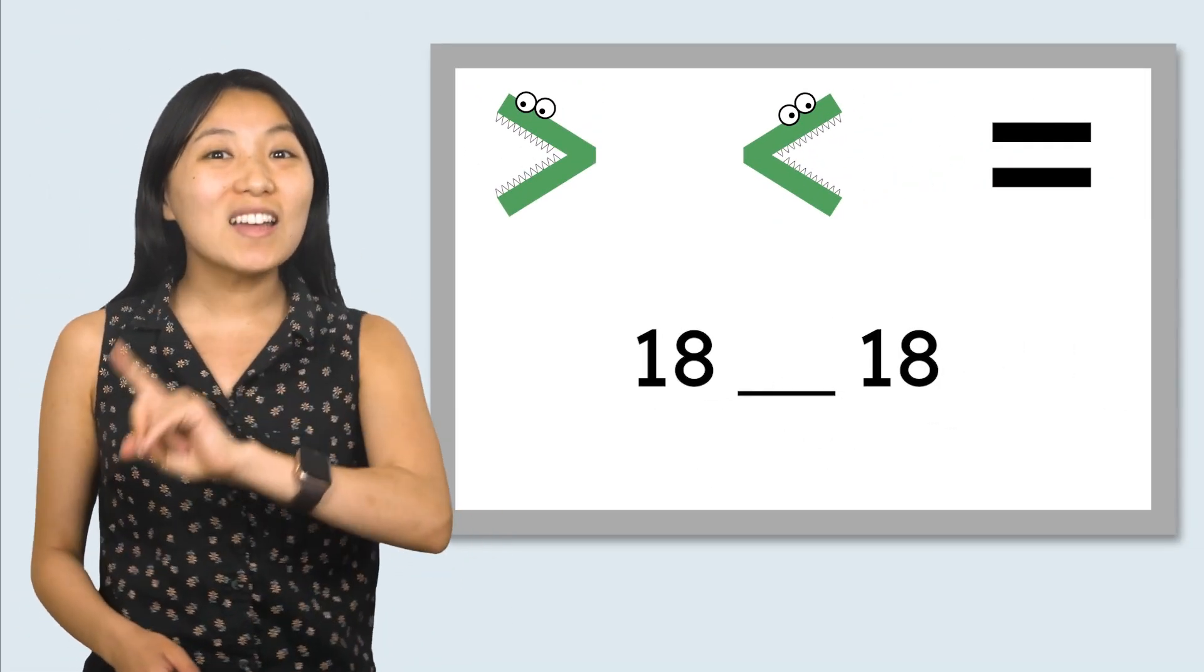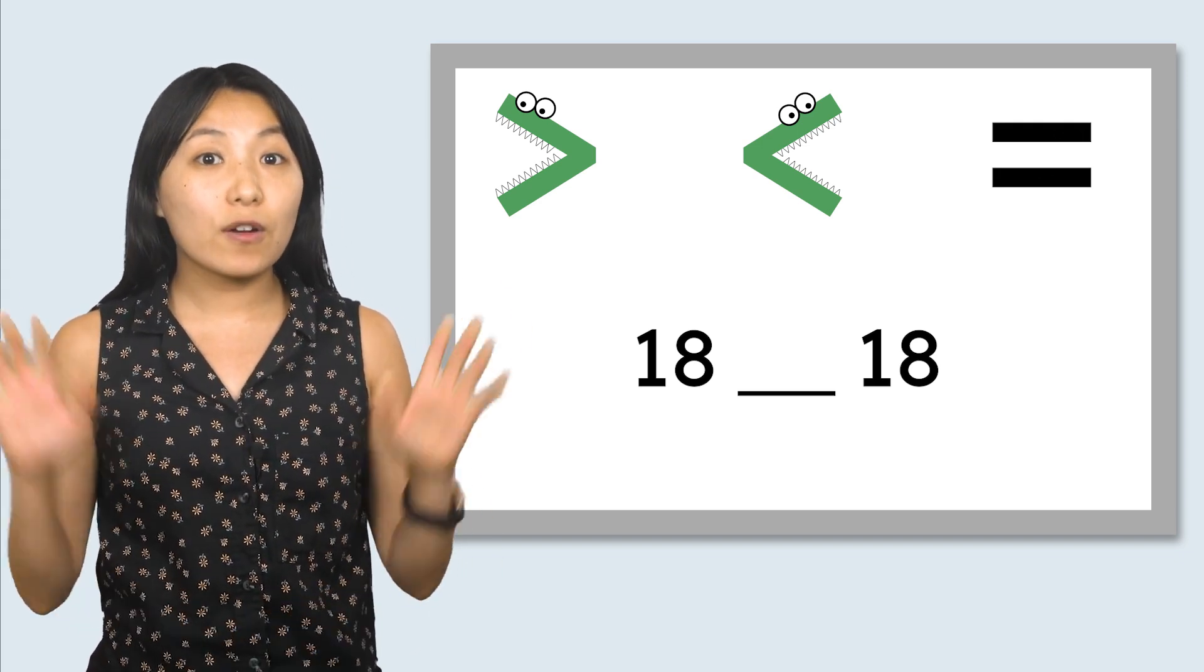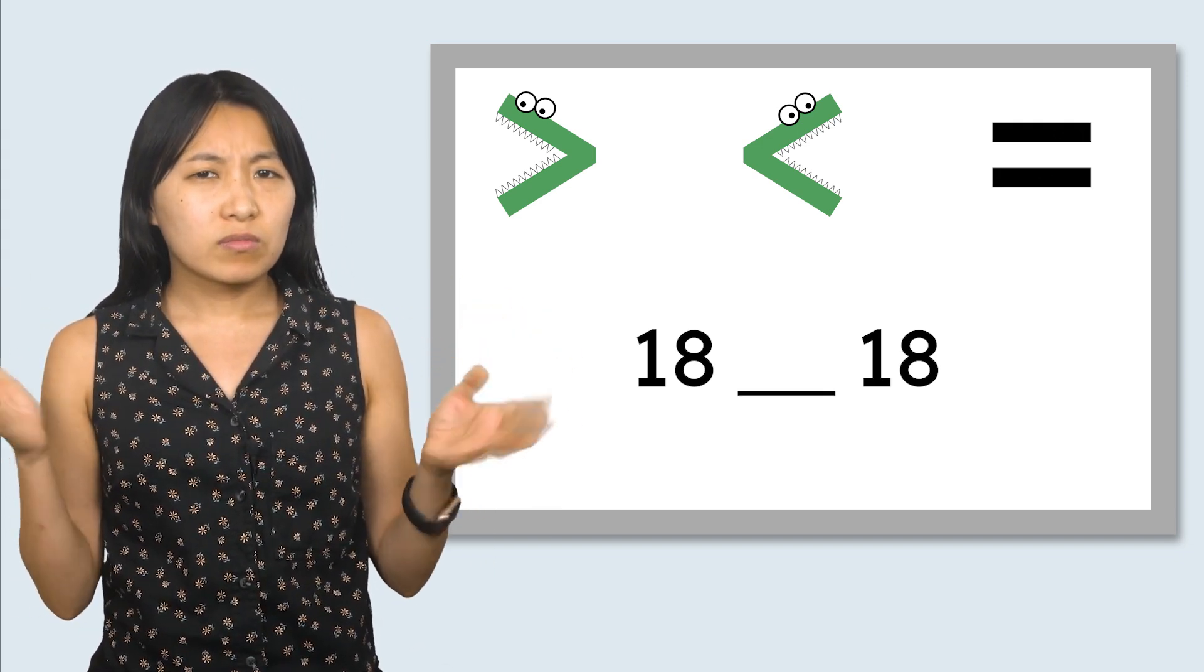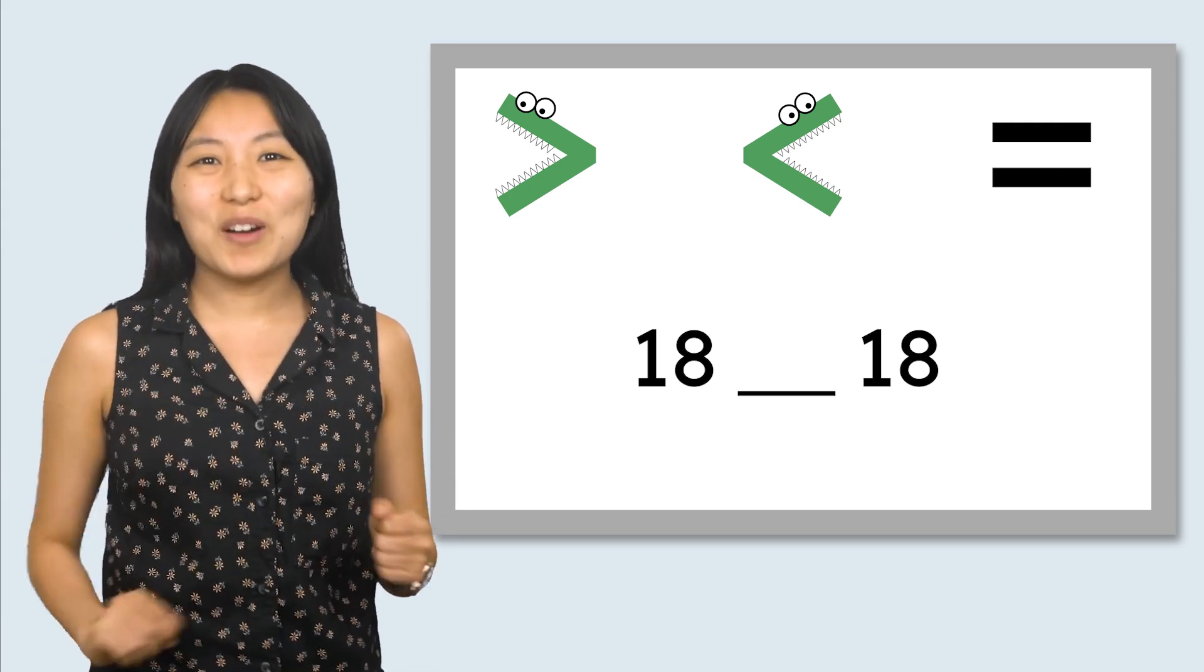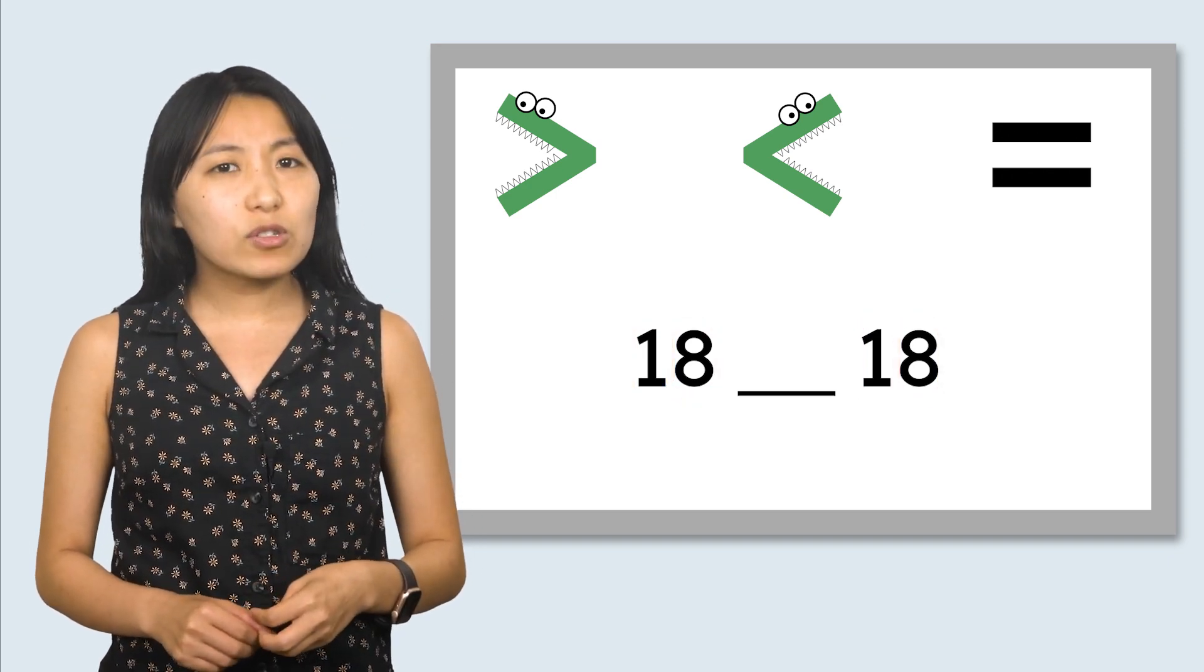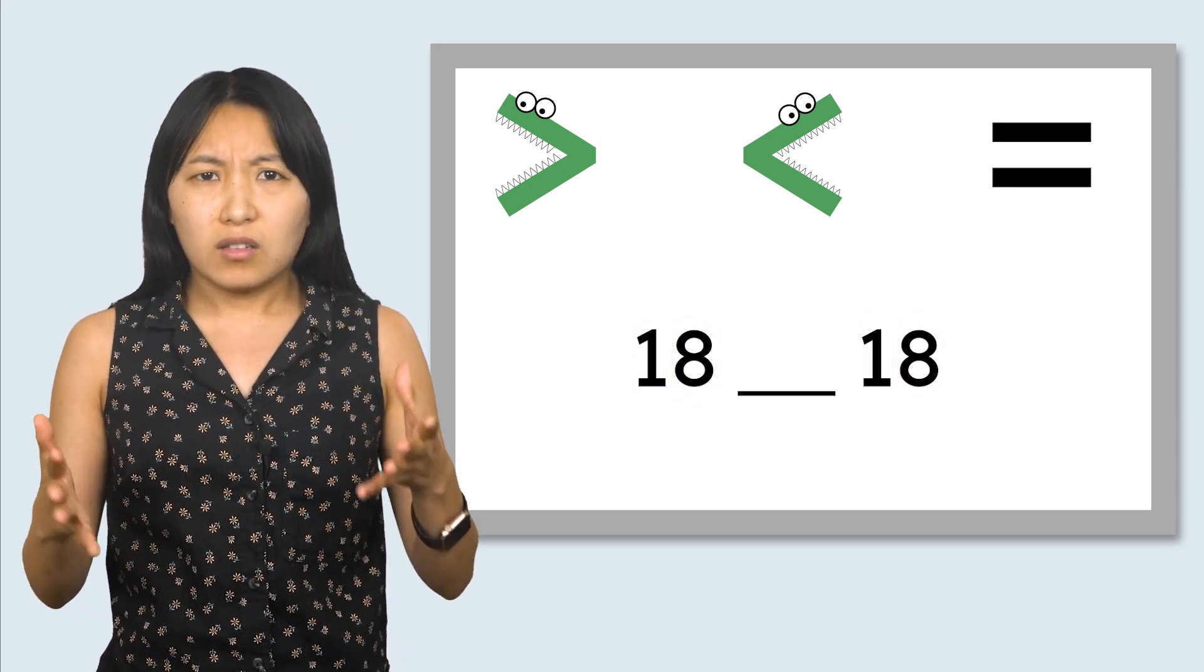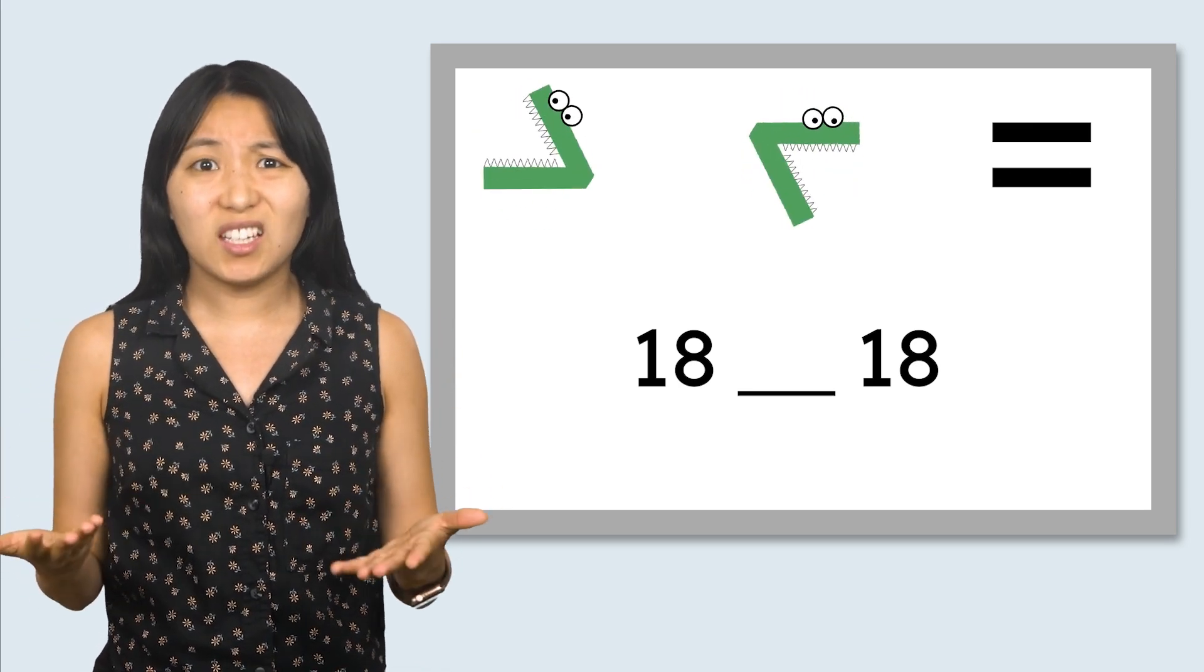We only have one part of Mia's math mystery left. We need to compare these two numbers. What do you notice about these numbers? Both of them have 1 10 and 8 1s. When the numbers are the same, the hungry alligators get confused and don't know which one to eat.